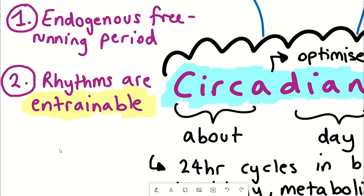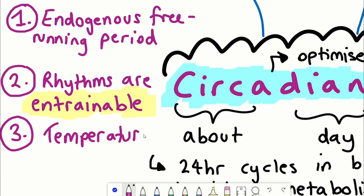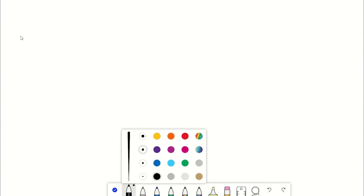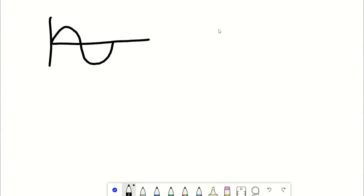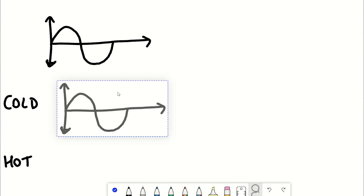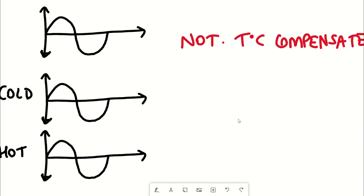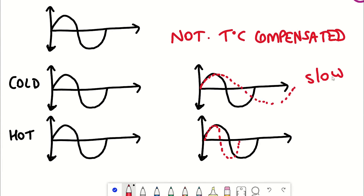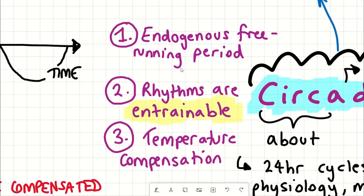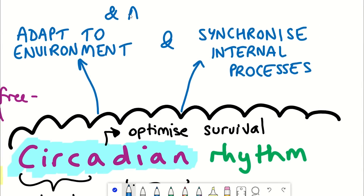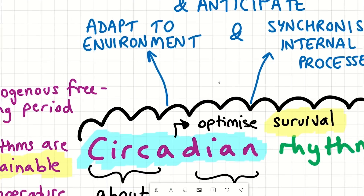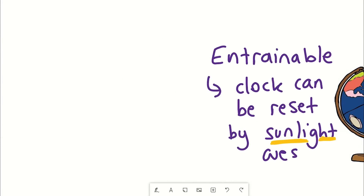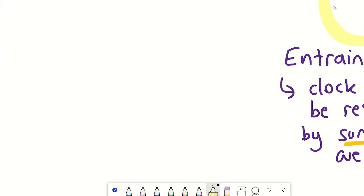And lastly, the rhythms must exhibit temperature compensation — basically meaning that the rhythm doesn't increase in speed if it gets hotter or decrease in speed when it gets colder, which could be pretty bad if you're living in the UK. Circadian rhythms allow organisms to anticipate and prepare for precise and regular environmental changes, which is really useful for survival.